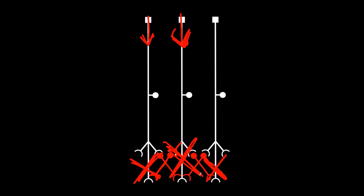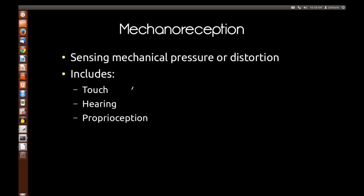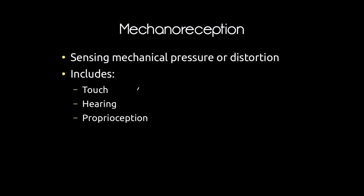Lateral inhibition is going to be really important in touch, mechanoreception, photoreception, and others. That's a general overview of sensory physiology. Let's move on now to specific individual types of senses, starting with mechanoreception.